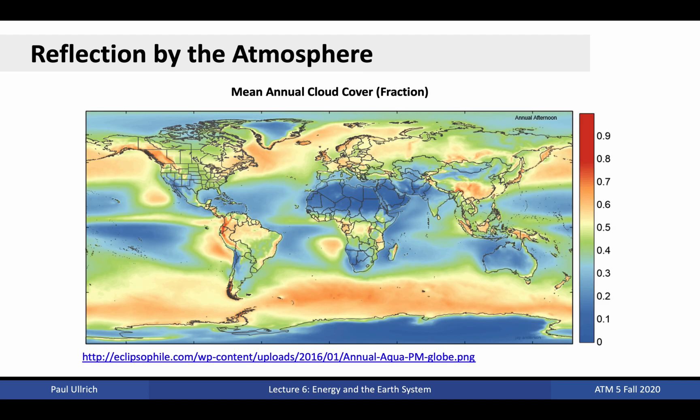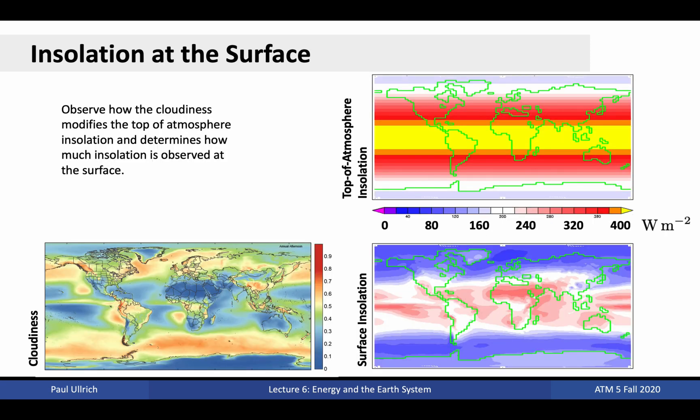Albedo varies from place to place. As discussed last time in the atmosphere, albedo is largely determined by cloudiness. When clouds are present, the atmosphere will tend to reflect more incoming radiation. In regions with few clouds, such as over the deserts of the world, solar radiation more easily passes through the atmosphere and to the surface. The figures here show how clouds are a major factor in determining regional variations in surface insolation. When clouds are present, surface insolation is low. Where clouds are absent, surface insolation is high.